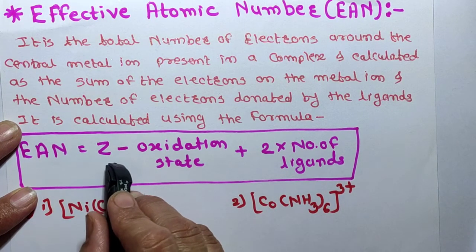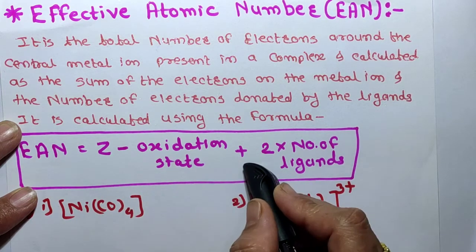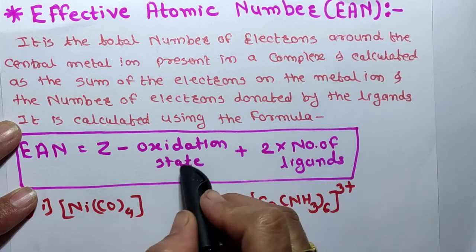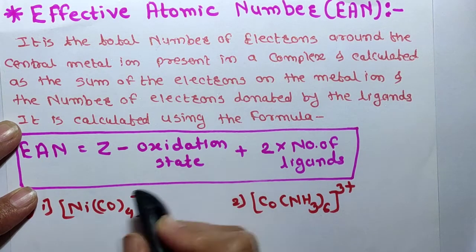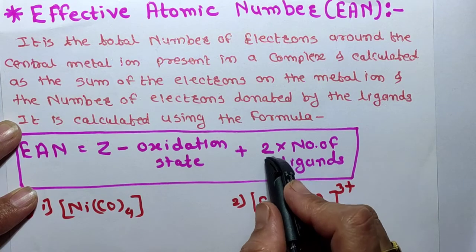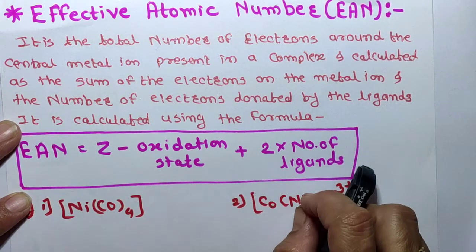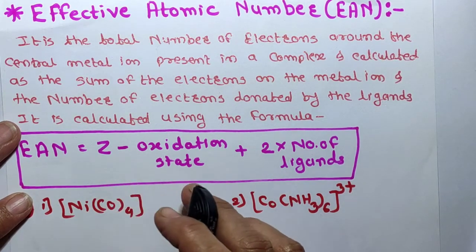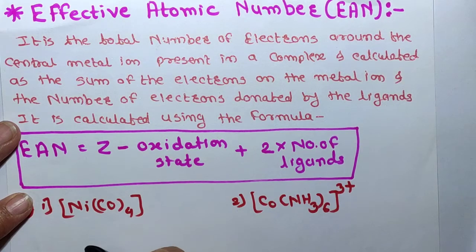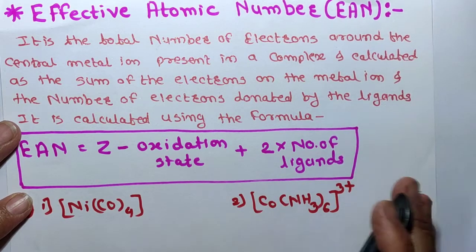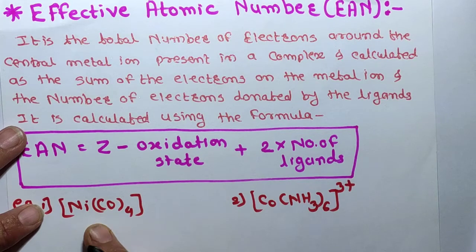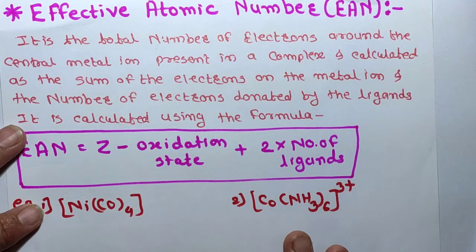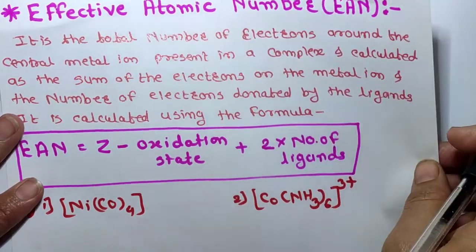EAN is equal to Z minus oxidation state, plus 2 into number of ligands. We calculate the oxidation state of the central metal and multiply the number of ligands by 2. If the EAN is equal to the atomic number of the nearest noble gas element, then that particular complex is most stable in nature.